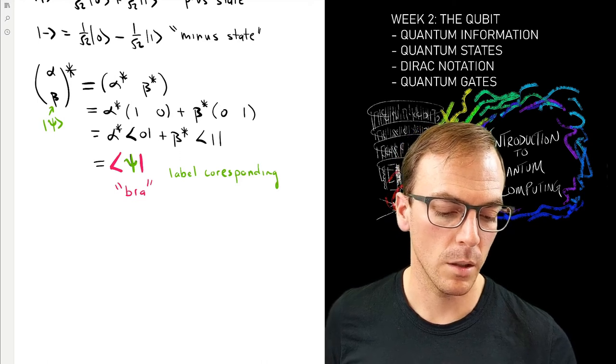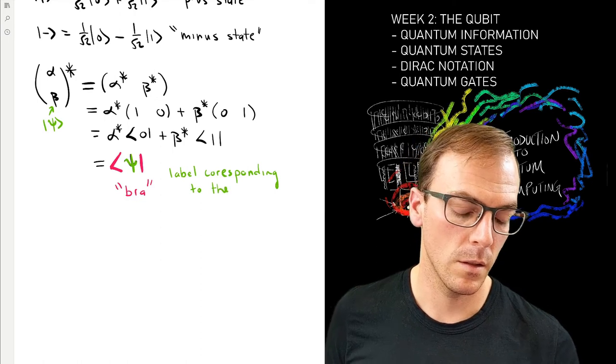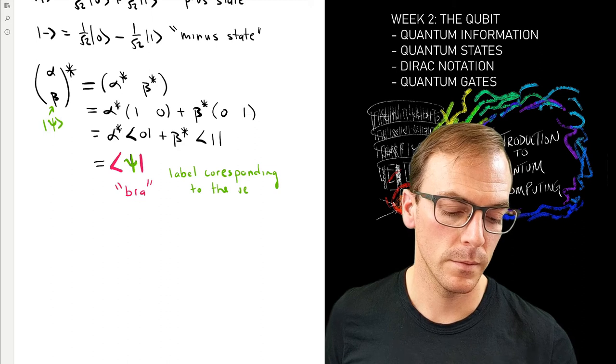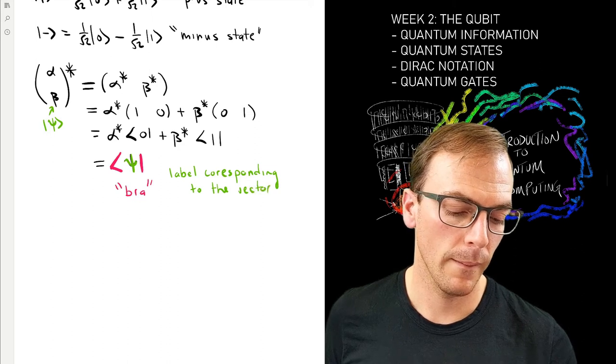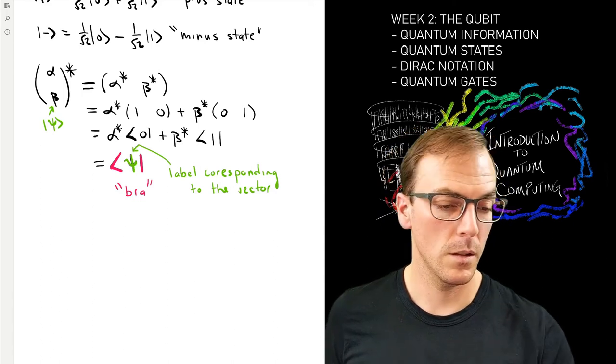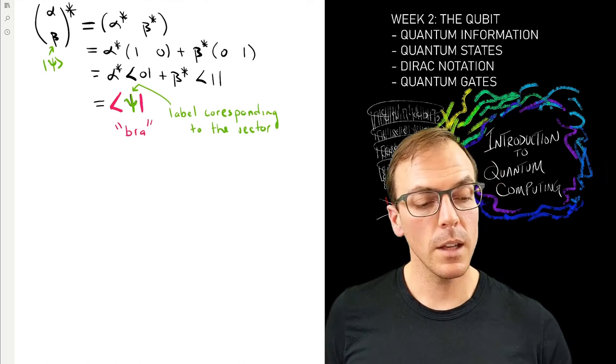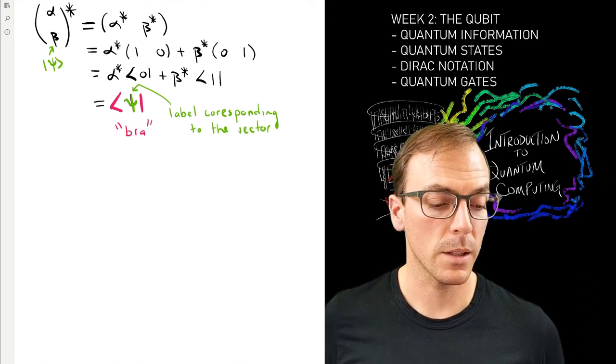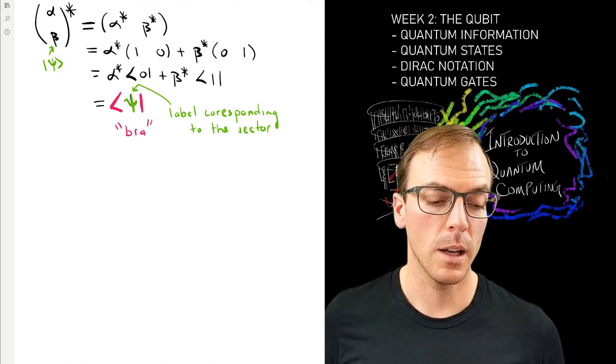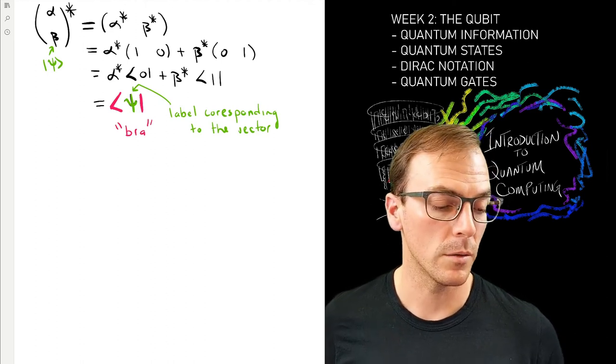This, in the same way as ket has its own name, so the outer kind of symbols in this for this object is called a bra. And again, the thing inside is a label and the label comes from the original. So this label is the one corresponding to the original vector.